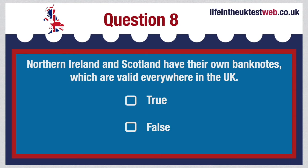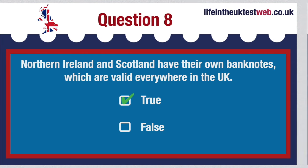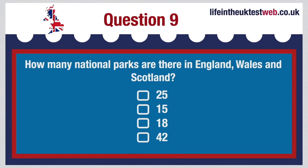The correct answer is: This statement is true. How many national parks are there in England, Wales and Scotland? 25, 15, 18 or 42? The correct answer is: There are 15 national parks in England, Wales and Scotland.